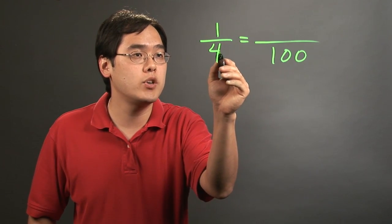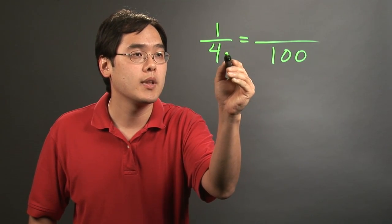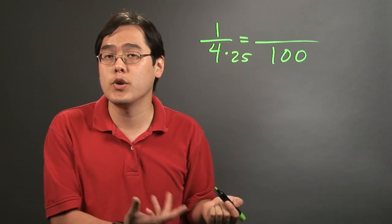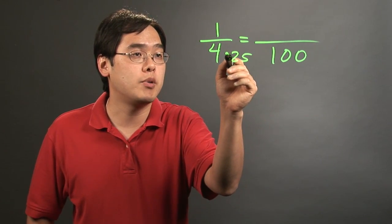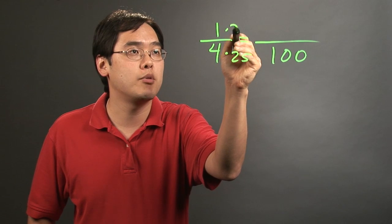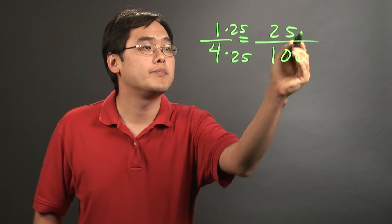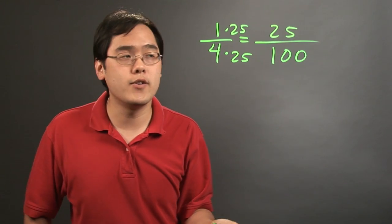So you want to think about four times what number is going to be a hundred. Well, four times twenty-five is going to be a hundred. But as you know, to convert to an equivalent fraction, if you multiply the bottom by a number, you have to multiply the top by a number as well. So one times twenty-five, that's going to give you twenty-five over a hundred.